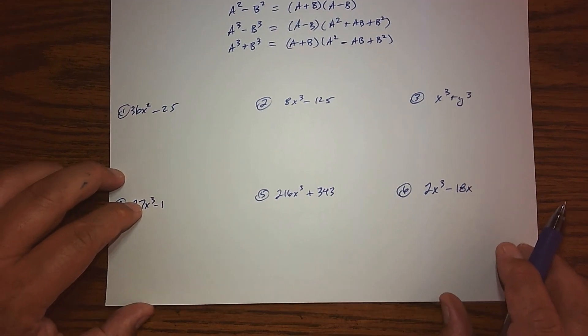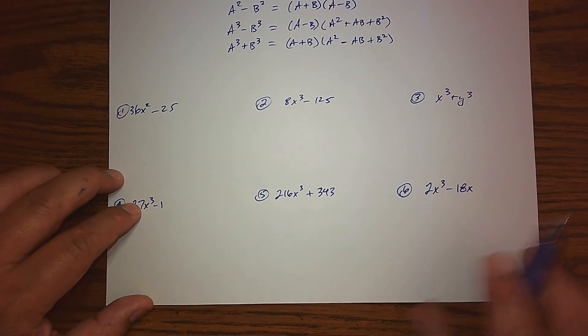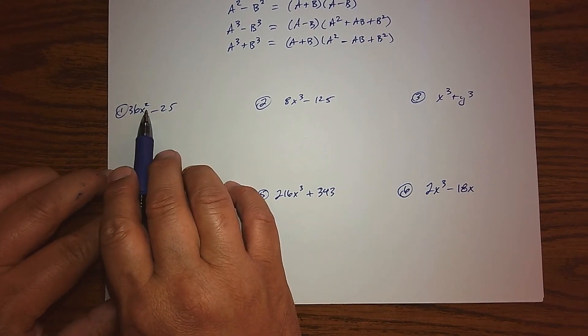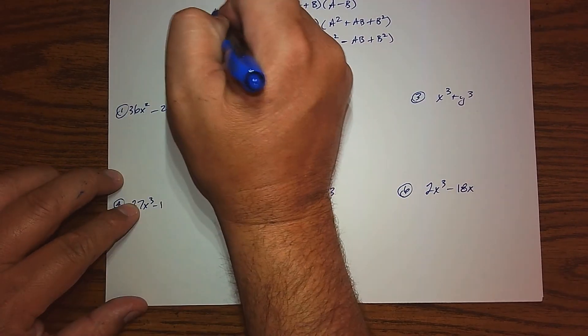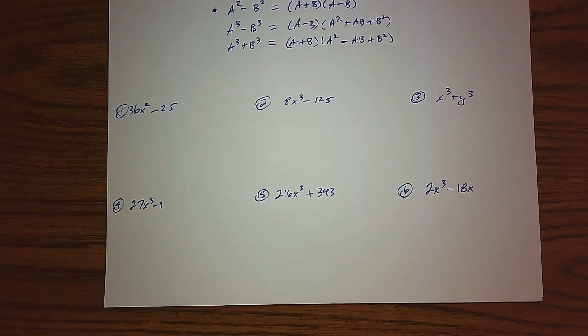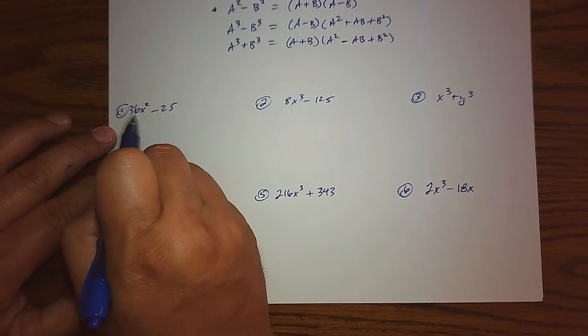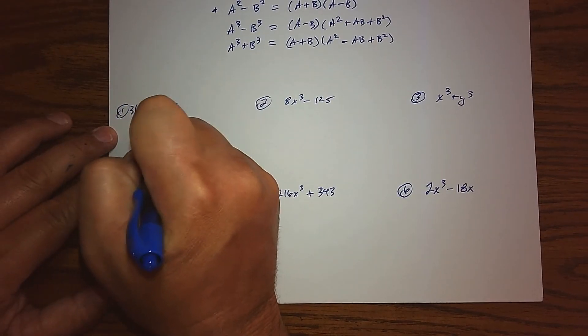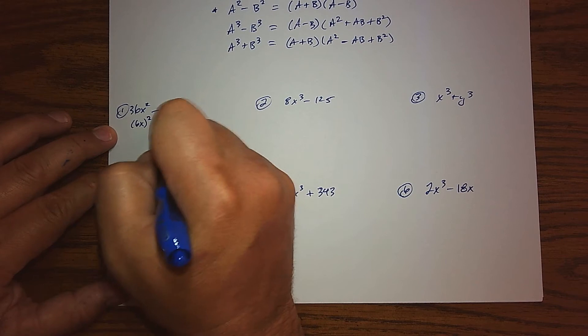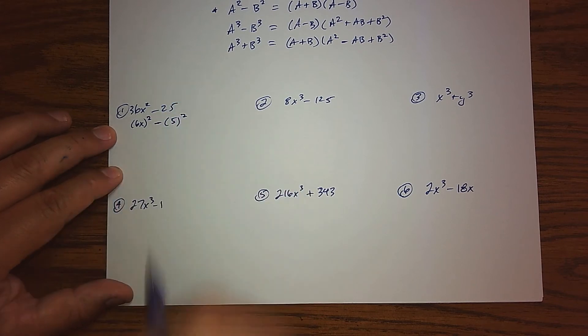So in number one, I have a difference, I have a subtraction, and I see a square, so this is making me think, well, this probably is our difference of squares pattern. I just need to make sure—can I write things as squares? Well, the first term, that's (6x)², and then 25 we know to be 5², so this definitely fits our pattern.